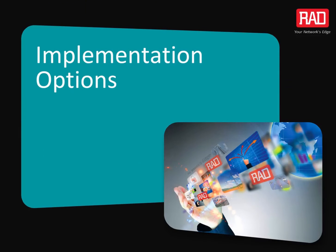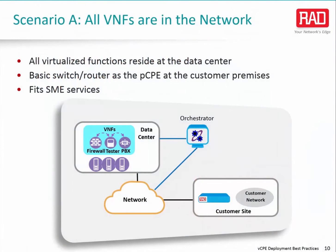There are various views on the placement of virtualized VCPE functionalities. Let's review the three main scenarios. This is a simple scenario, using only a basic switch router as the physical device at the customer premises, while all virtualized functions reside at the data center. Service providers can deploy VCPE software packages from specific vendors which include pre-selected service applications. Alternatively, they can service-chain network functions that are sourced separately to fit their needs. The most likely use of this approach would be in the SME services market, in which speed and performance requirements can be fully supported by a VCPE residing in the cloud.